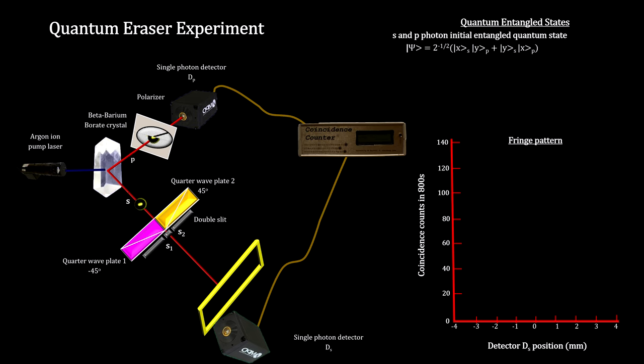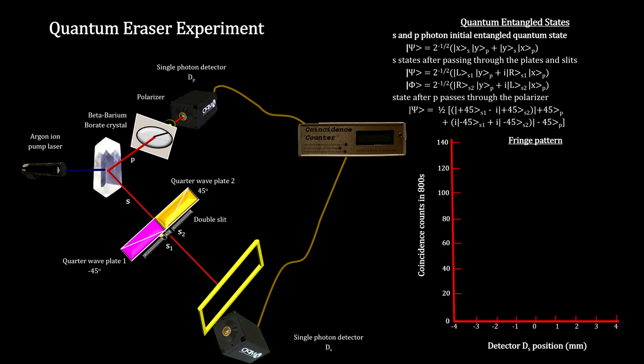This changes the P photon's state. The entangled S photon is modified as well, but maintains its linear polarity. Therefore, it will still be turned into left or right circular polarity by the wave plates, and therefore still eliminate the interference pattern generating quantum state terms, and therefore still create the blob, rather than an interference pattern.